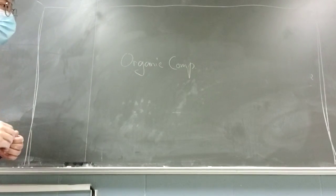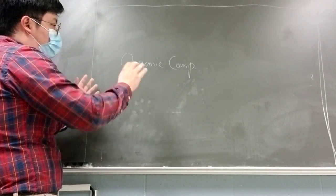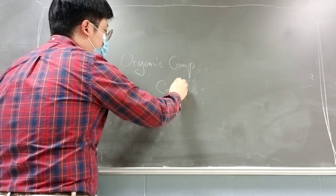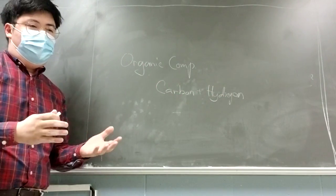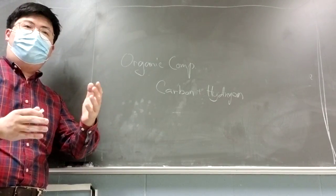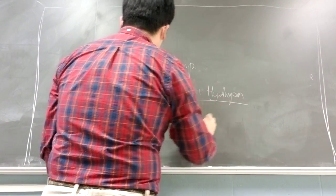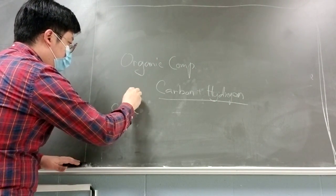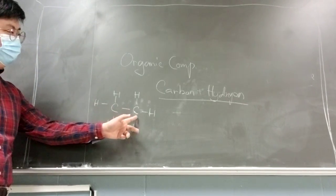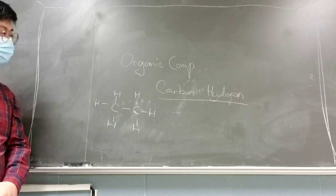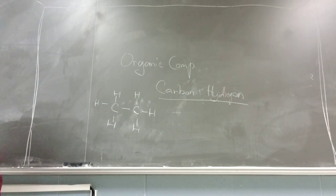Organic compounds simply means any compounds mainly composed of carbon and hydrogen. If we have a compound made by carbon and hydrogen — or mostly carbon and hydrogen — you can confidently say it's an organic compound. For example, a compound with two carbons and six hydrogens chemically bound to each other is a good example of an organic compound.